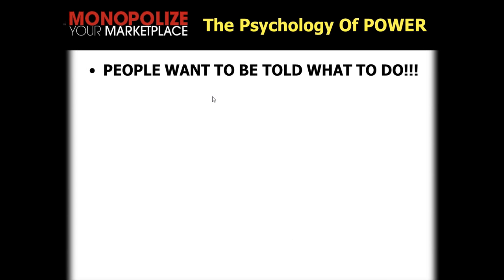Okay, the psychology of power — and this is where I was. I was telling you that people want to be told what to do. This is why power is so important. Evaluate this in your mind: do people want to be told what to do? Well, it depends on the situation and context, but as it relates to them buying stuff, do they want to be told what to do? The answer is they very often do. Why? Because they don't know. If they did know, they would just go down and buy it.